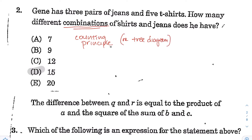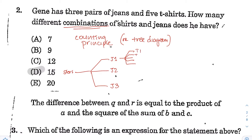To do this using the tree diagram, which is the more classic example, you start and pick a pair of jeans. You have three options: jean number 1, jean 2, or jean 3. After you pick a pair of jeans, you pick a t-shirt. Within each branch, you branch out 5 more times because you have t-shirt 1, t-shirt 2, t-shirt 3, t-shirt 4, and t-shirt 5.